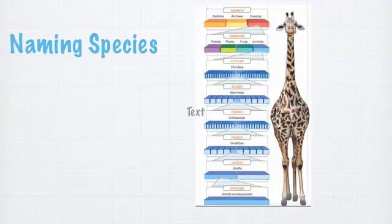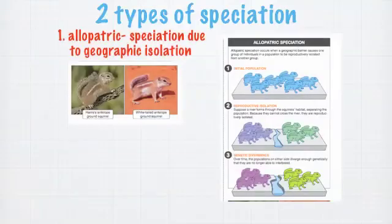We talked about taxonomy — 'King Philip comes over for good soup' — to remember Kingdom, Phylum, Class, Order, Family, Genus, Species. There are more organisms in a kingdom than in an order, which has less. Species are named using genus and species — like Homo sapiens. Remember to italicize or underline genus and species names.